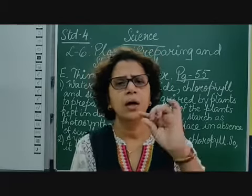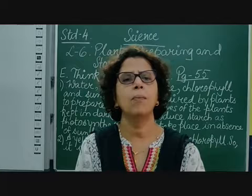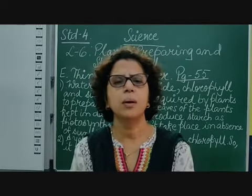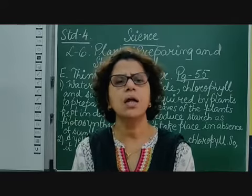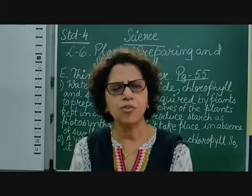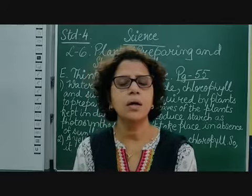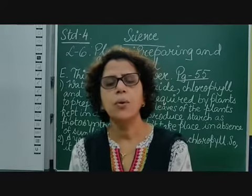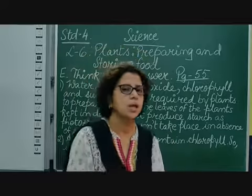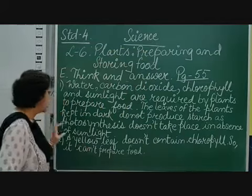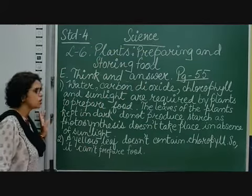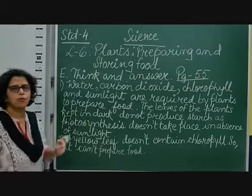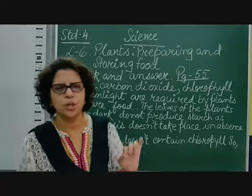Some plants have reddish or brownish color, but due to that reddish substance their green color is hidden — they still have chlorophyll. But if a plant has yellow leaves it will not produce food because they need chlorophyll. A yellow leaf doesn't contain chlorophyll, so it cannot prepare food. Chlorophyll is very important for the preparation of food.